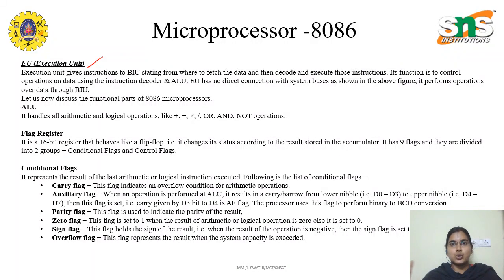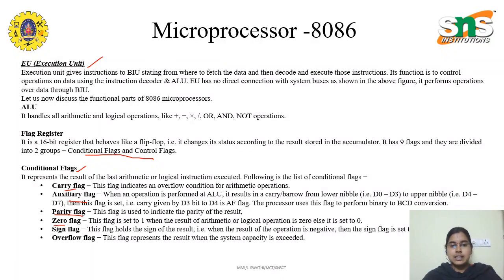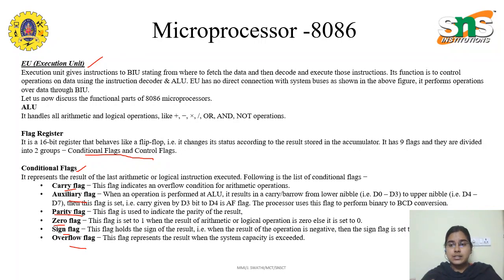The flag register has nine flags divided into two groups: conditional flags and control flags. Conditional flags represent the result of the last arithmetic or logical instruction executed. These include: the Carry Flag, which indicates an overflow condition for arithmetic operations; the Auxiliary Flag, which is set when an operation in the ALU results in a carry or borrow from the lower nibble; the Parity Flag, used to indicate the parity of the result; the Zero Flag, which is set to one when the result of an arithmetic or logical operation is zero; the Sign Flag, which holds the sign of the result; and the Overflow Flag, which is set when the system capacity is exceeded.